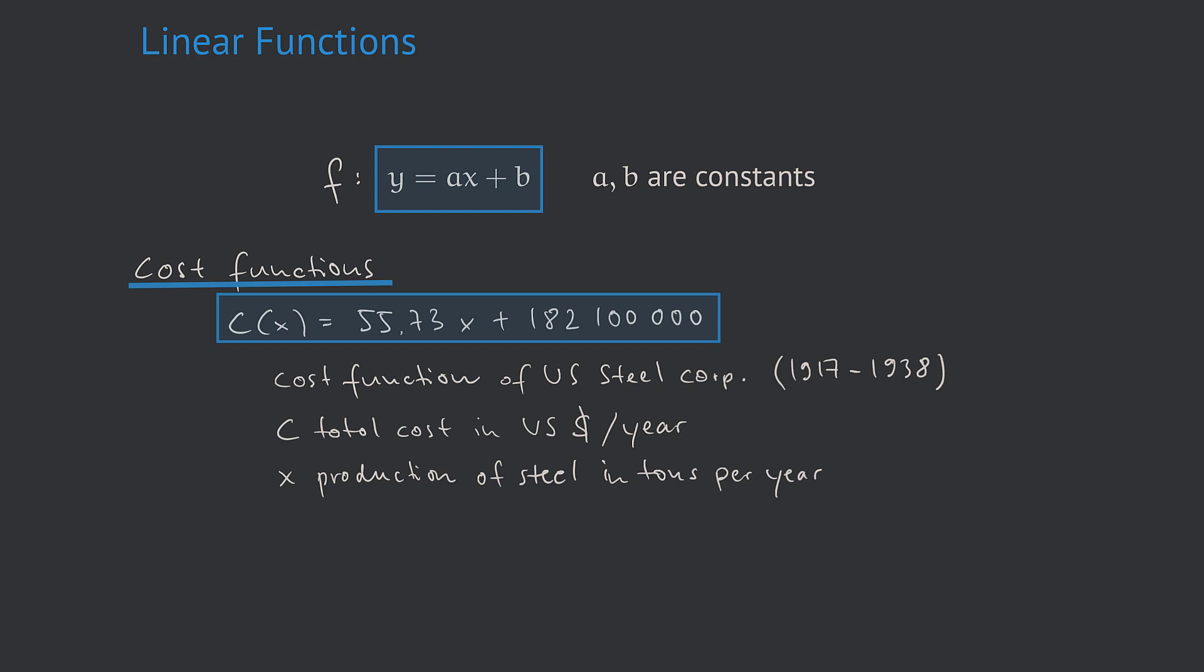One example is cost functions in economics. This function here is the cost function of the US Steel Corporation. C of x is the total cost in US dollars per year, whereas x is the production amount of steel in tons per year.